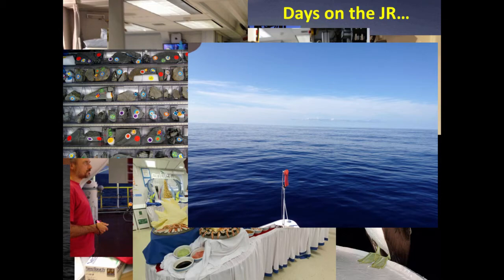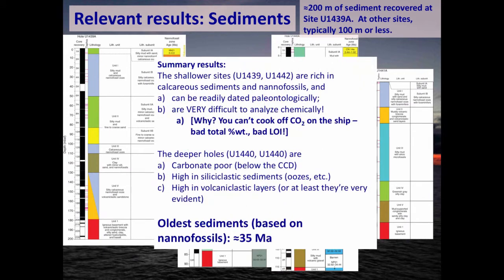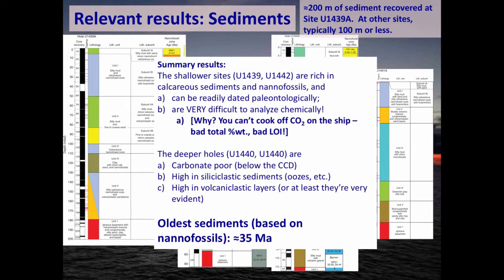It was a summertime cruise and remarkably calm much of the time. Briefly on the sediments: we were mostly not seeking sediment; the holes typically had less than 100 meters of it. The key finding was a change in sediment composition going from shallower sites at about 3,000 meters water depth — where there were lots of carbonate-rich sediments with nanofossils that were readily dateable — to deeper holes that were much poorer in carbonate, appearing to be below the carbonate compensation depth, and very rich in siliciclastic sediments and volcanoclasts. Nanofossil ages reached about 35 million years, putting us in about the right spot.